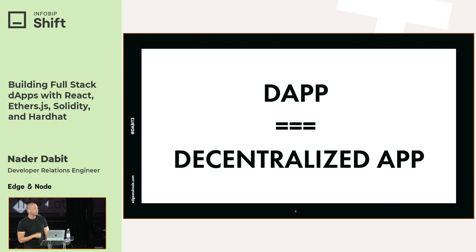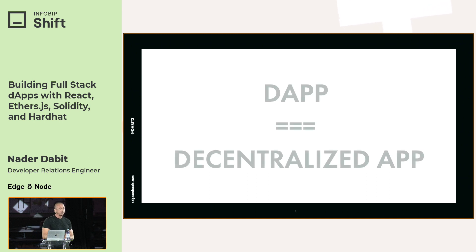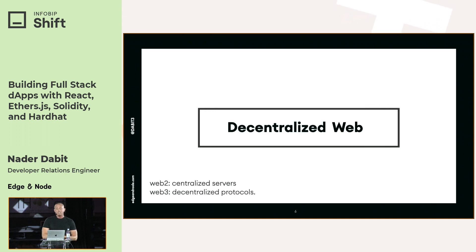So what is a DApp? A DApp is a decentralized app — essentially a Web3 app. By the end of this talk you'll understand what that means. So before we do that, let's talk about Web3.